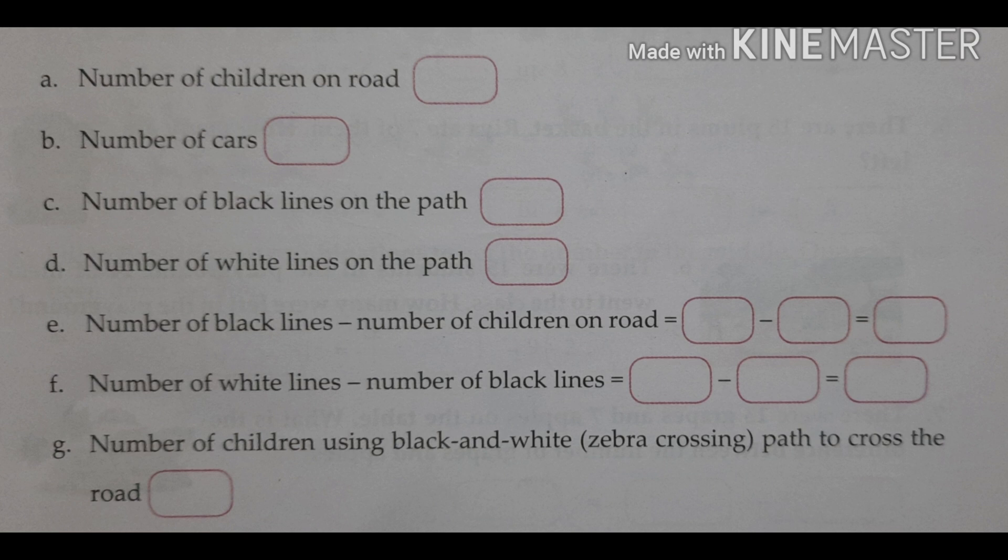Next is number of black lines minus number of children on the road. Okay? Black lines minus number of children. Next one is number of white lines minus number of black lines. So write it. You will get the answer.